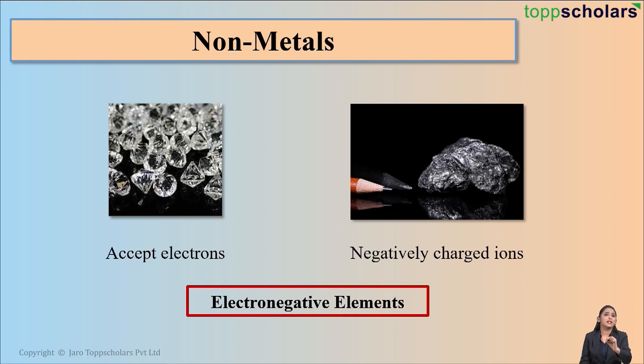You can remember this simply from the name electronegative. Electro stands for electron, and we know that non-metals accept electrons. On accepting electrons, what do they form? Negatively charged ions. So, electronegative elements.